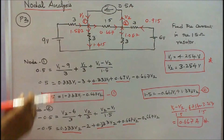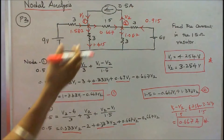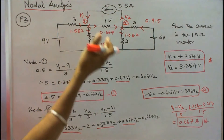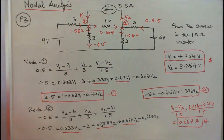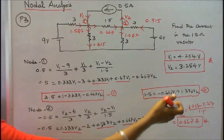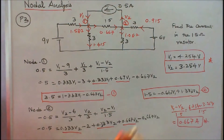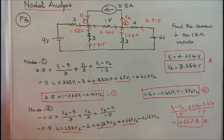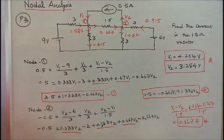Knowing V1 and V2, the current through the 1.5 ohm resistor equals (V1 minus V2) divided by 1.5, which equals 0.667 amps. Current flow in the 1.5 ohm resistor is 0.667 A.